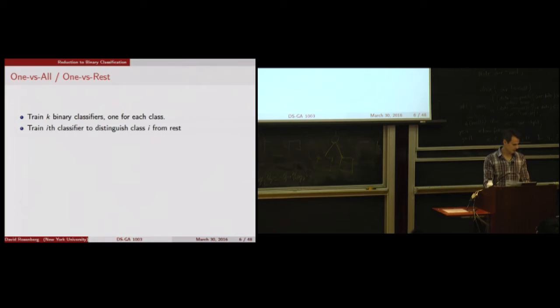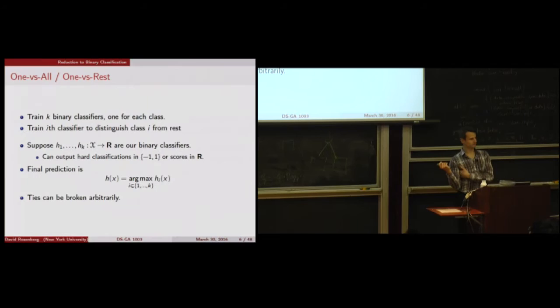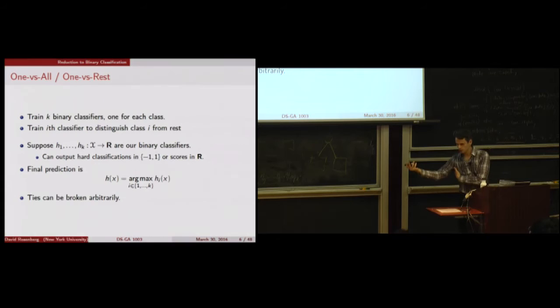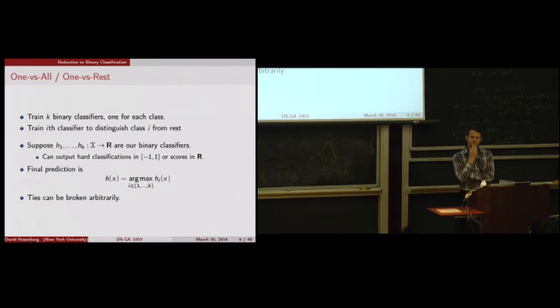More mathematically: we take K binary classifiers, one for each class, each trained to separate one class from the rest. Denote the K classifiers by H1 through HK. They can output hard classifications or scores. Our final prediction is whichever classifier gives the largest score for X. We denote the class by I, look at the predictions of each classifier, and whichever gives the highest score is our prediction. Ties can be broken arbitrarily.